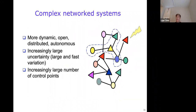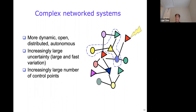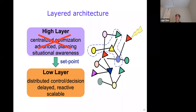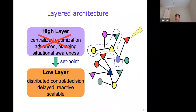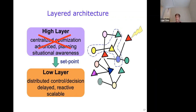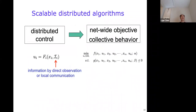However, with wide deployment of embedded sensing, communication, and actuation, modern network systems become more dynamic, open, distributed, and autonomous, with an increasingly large uncertainty and an increasingly large number of control points. In such a dynamic setting, network-wide objectives cannot be achieved through centralized optimization, as it cannot be solved timely due to unavailability of the proper inputs and inability to solve a large centralized problem at a fast timescale. This requires the development of new control architectures and algorithms, especially scalable distributed algorithms, to achieve network-wide objectives.